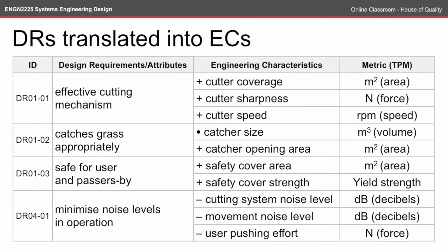I've taken the design requirements, which we translated into engineering considerations in the TPM online classroom. You'll notice that each engineering characteristic has a direction — for example, we want to increase the cutter coverage or reduce the movement noise level. Each also has an associated metric. I'm going to take the information we've already come up with and put it into a House of Quality framework.